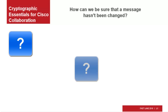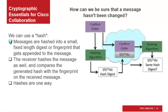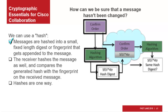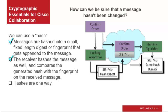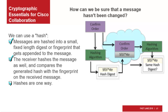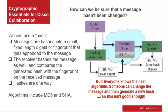How can we be sure that a message hasn't been changed? We need to verify the integrity of messages we receive, and in particular the integrity of public keys we might use in communications. We can use a hash to verify message integrity. Messages are hashed into a small, fixed-length digest or fingerprint that gets appended to the message. The receiver hashes the message as well and compares the generated hash with the fingerprint on the received message. Hashes are one way — it's impossible to recover the hashed message from the digest. Algorithms include MD5 and SHA; Cisco Collaboration applications use SHA-1 and SHA-2. But everyone knows the hash algorithm, so someone can change the message and then generate a new hash, which means this isn't good enough on its own.